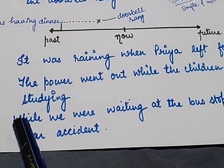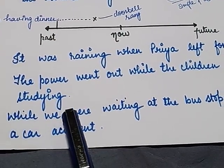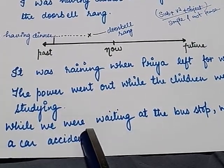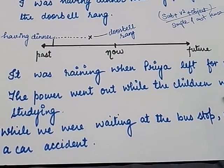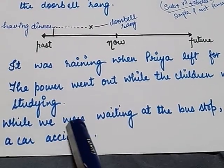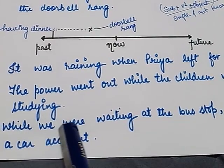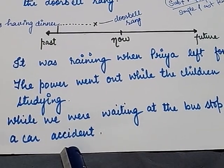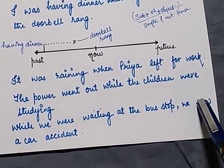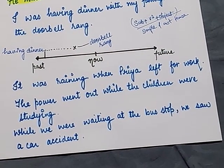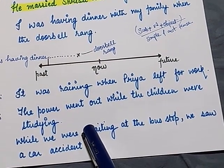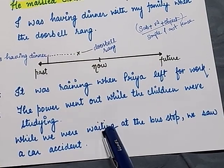Here is one more example: 'While we were waiting at the bus stop, we saw a car accident. Thankfully, nobody got hurt.' This is the unfinished action — 'we were waiting at the bus stop' — and the finished action is 'we saw a car accident.' Because 'we saw' is the finished action, it is in simple past tense, and 'we were waiting' is the unfinished action, so it is in past continuous tense.